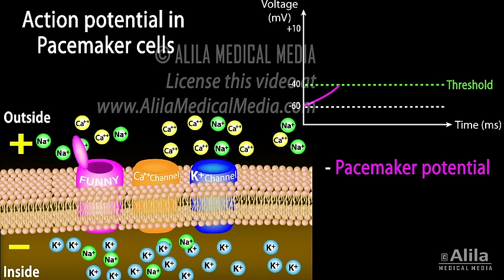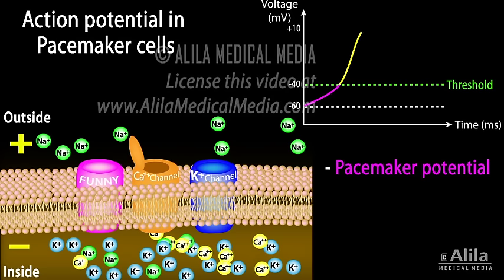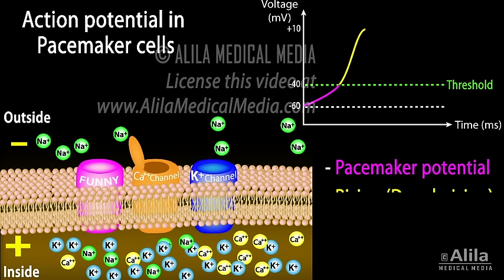Funny channels open when membrane voltage becomes lower than negative 40 millivolts and allow slow influx of sodium. The resulting depolarization is known as pacemaker potential. At threshold, calcium channels open, calcium ions flow into the cell, further depolarizing the membrane. This results in the rising phase of the action potential.